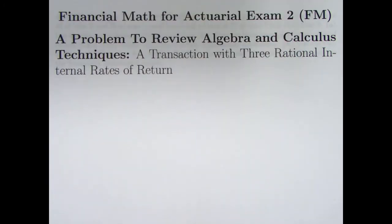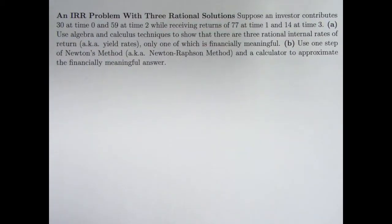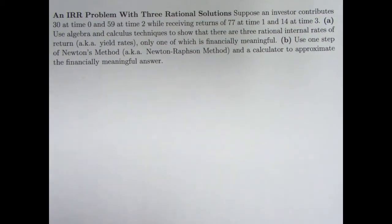We're in chapter 5 of this book right now. We'll eventually be getting into chapter 7, and definitely your algebra and calculus skills will be needed, so it might not be a bad idea to review that. This is a transaction with three rational number internal rates of return. Typically they're irrational, but to review algebra and calculus I thought it would be good to do this example I made up on my own.